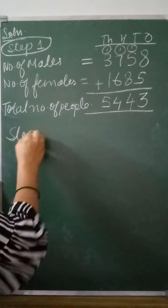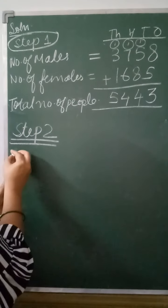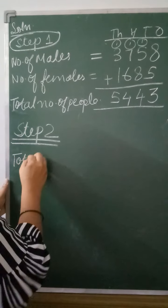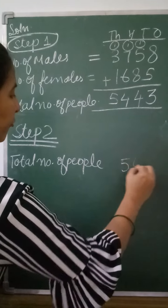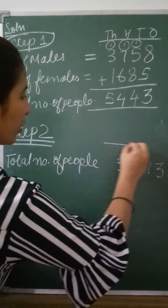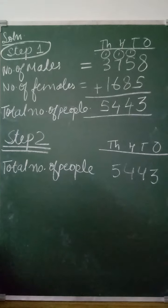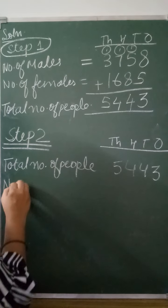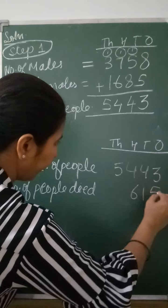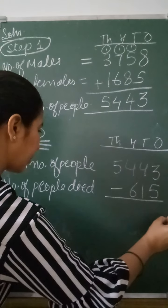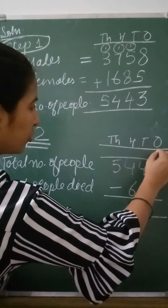Step 1 is done. Now move to Step 2. The remaining operation is subtraction. Total number of people: 5,443. Number of people who died: 615. One is a four-digit number and the other is a three-digit number — no problem, let's start the subtraction.